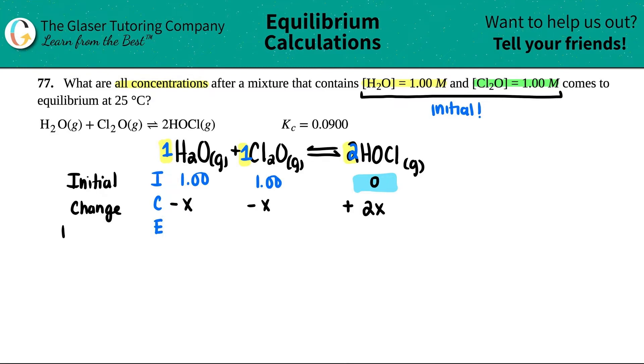E stands for equilibrium - that's the overall sum of your initial and your change. For H2O it's 1.00 minus x, same for Cl2O, 1.00 minus x, and this one is zero plus 2x, which is just 2x. Now we have all our equilibrium values to plug into the Kc expression.